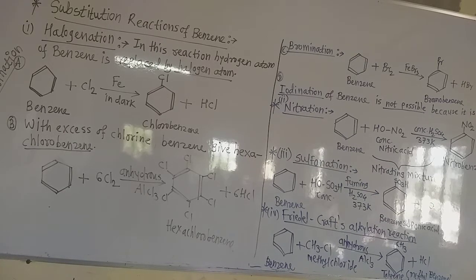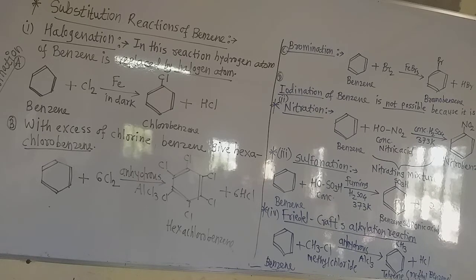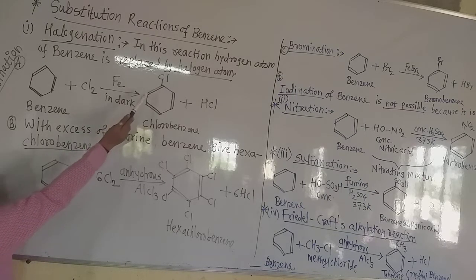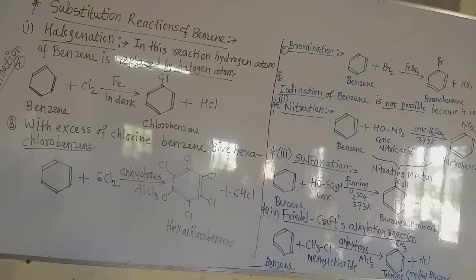Now let us see first chlorination. There are two reactions of chlorination. In the first reaction, chlorine gas reacts with benzene in the presence of iron, Fe, as a catalyst, in the dark, and gives chlorobenzene. One of the hydrogen atoms from a carbon of benzene is replaced by one of the chlorine atoms of the chlorine molecule, and that chlorine gets attached to the ring, forming chlorobenzene. The replaced hydrogen and the remaining chlorine atom form the byproduct HCl.